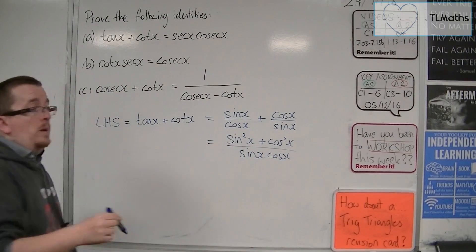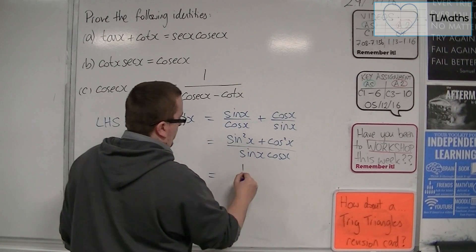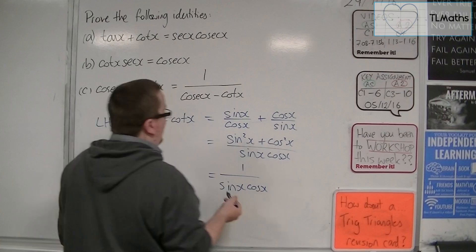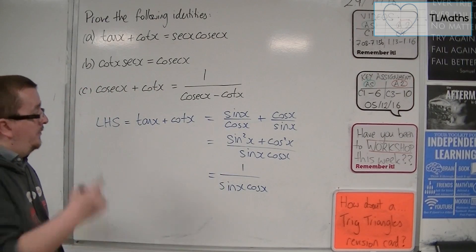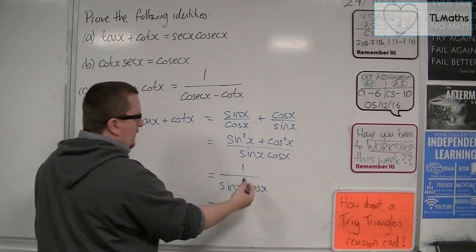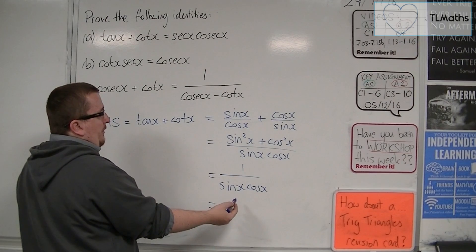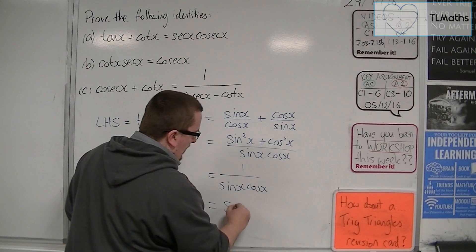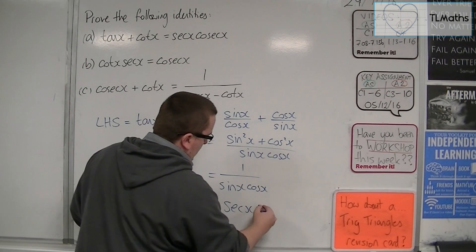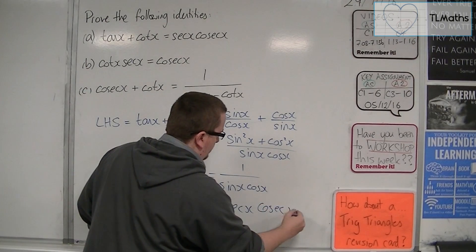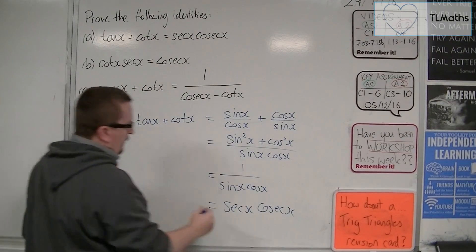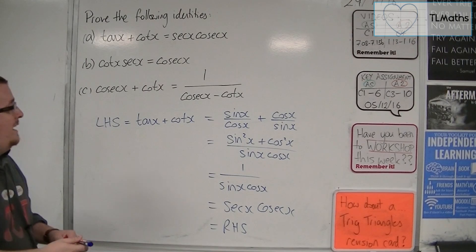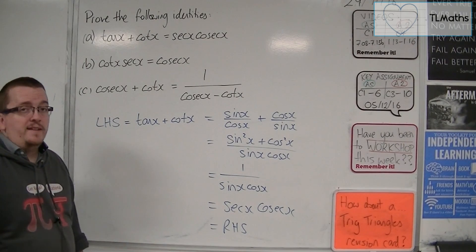Now, sine squared plus cos squared is one. That's one of the trig identities. So we get left with one over sine x cos x. Now, one over sine x is cosec, and one over cos is sec. So we have the sec x there, and we've got the cosec x there, which is the right-hand side. And that's how we can prove the first of those identities.